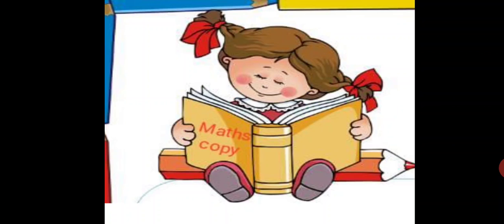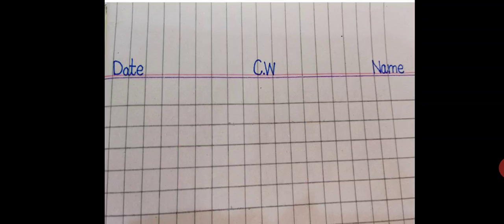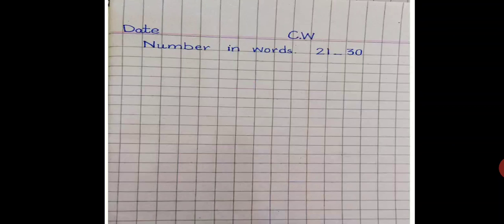Take out your neat notebook and write C.W. in the middle of the page. On the left side you will write date, and on the right side you will write your name.